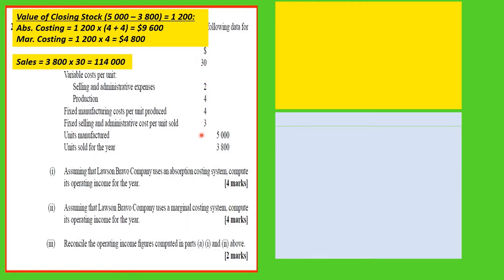Instead of using just the unit costs to compute operating income, I will do the entire income statement so we can see how that is done with the same data. For the absorption costing income statement, sales are $114,000.